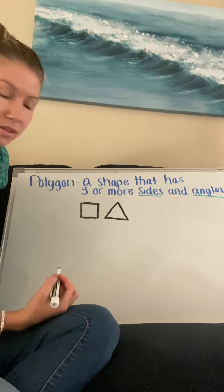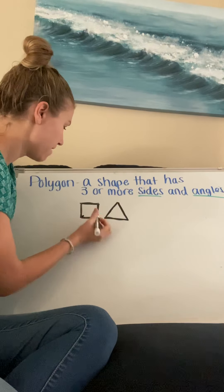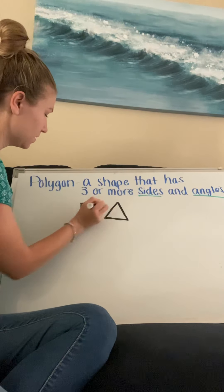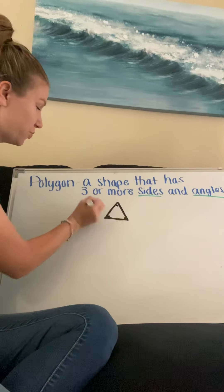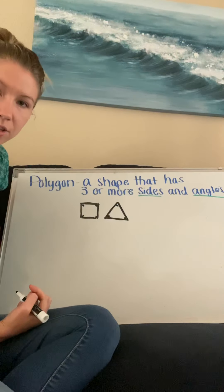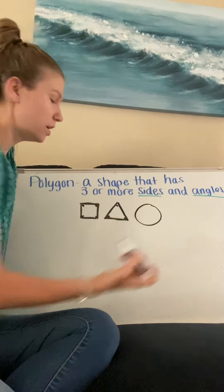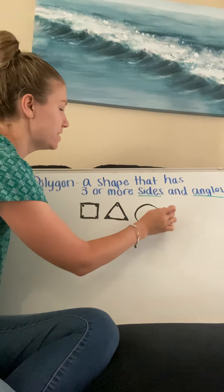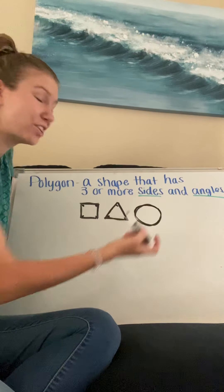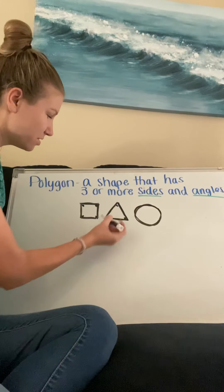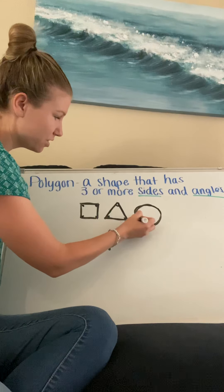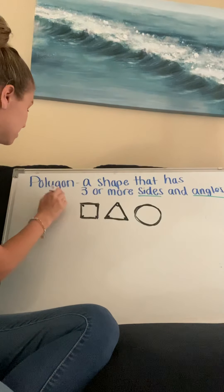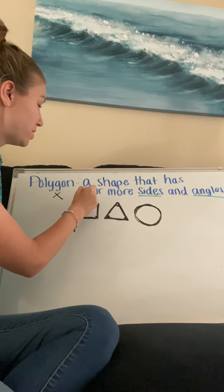Angles are the corners — where two sides come together, that is what an angle is. So our square had four angles and our triangle had three angles. What if I drew a circle? Well, sides are straight lines that connect the shape, and a circle has just one never-ending line that isn't straight. So a circle doesn't have any sides. And since there are no sides coming together, a circle also does not have any angles. So a circle is not a polygon, because a polygon is a shape that has three or more sides.